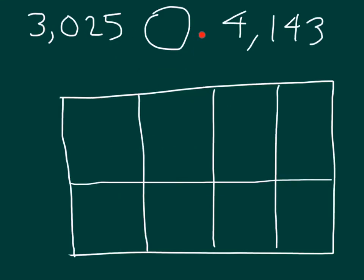Let's start by comparing two numbers. Can you say each of these numbers? Did you say 3,025 and 4,143? Here we have a place value board where we will go ahead and model each of these numbers. We'll model 3,025 here and 4,143 right there, so we'll be able to compare those two numbers.